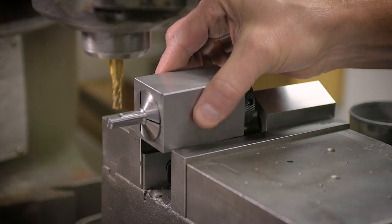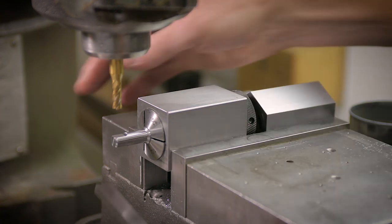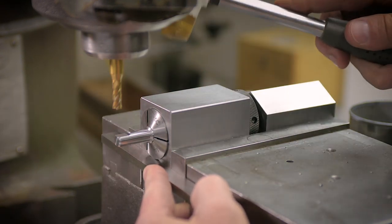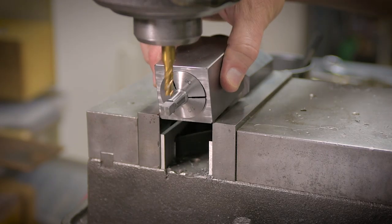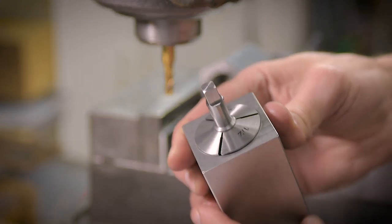This is the beauty of these collet blocks. Take it out, turn it 90 degrees, put it back in. And then I just use a parallel to reference it to the edge of the vise jaws and we're ready to go. At this point I was feeling pretty confident. I'm not sure why, but I made the gutsy move to go ahead and cut all four sides. So I wonder how close I got.